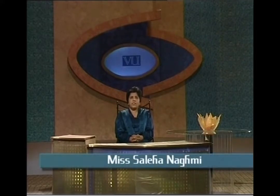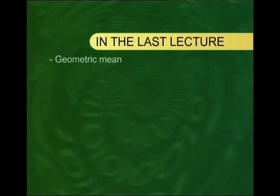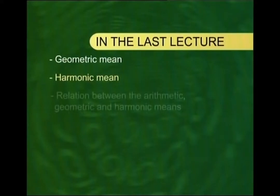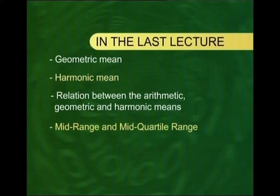Assalam alaikum, welcome to lecture number 10 of the course on statistics and probability. In the last lecture I was discussing the concept of central tendency, in particular the geometric mean and the harmonic mean, and the relationship that exists between the arithmetic mean, geometric mean, and harmonic mean. Towards the end of the last lecture I also covered the mid-range and the mid-quartile range. Today I am going to begin another extremely important concept, and that is the concept of dispersion.